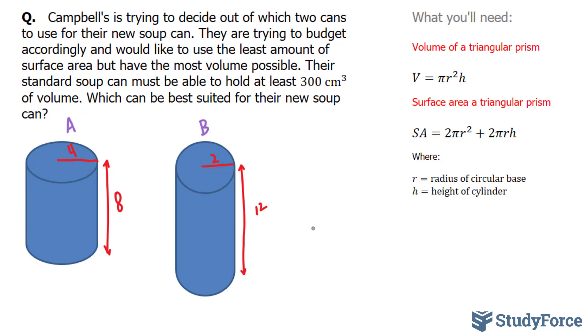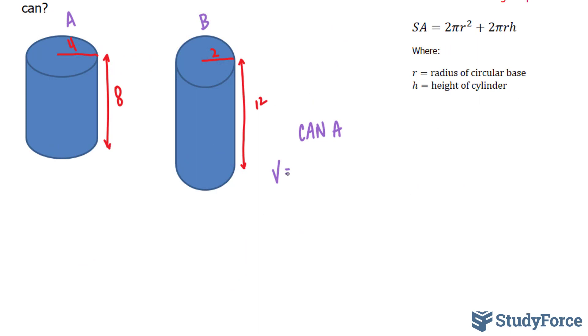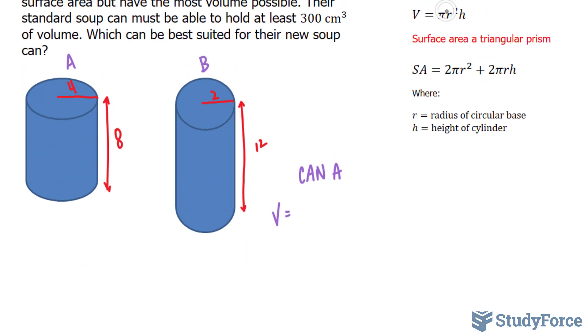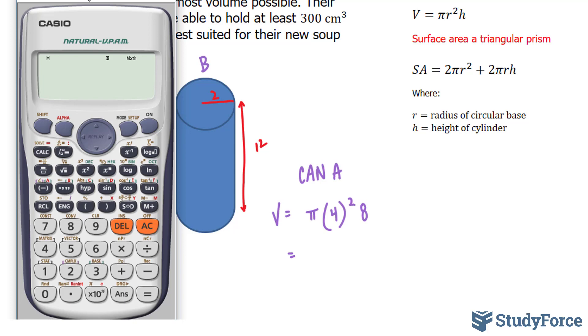So let's start off with can A. The volume for can A is equal to, using this formula right here, pi times r, which is 4, all represents the radius, to the power of 2 times the height, which is 8. Using our calculator, and when you calculate these types of questions, make sure that you use the pi button on your calculator. So in our case, it's shift that button, bracket 4 to the power of 2 times 8. And we end up with 128 pi.